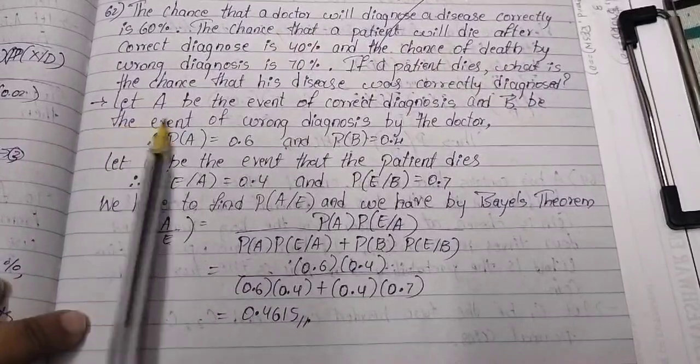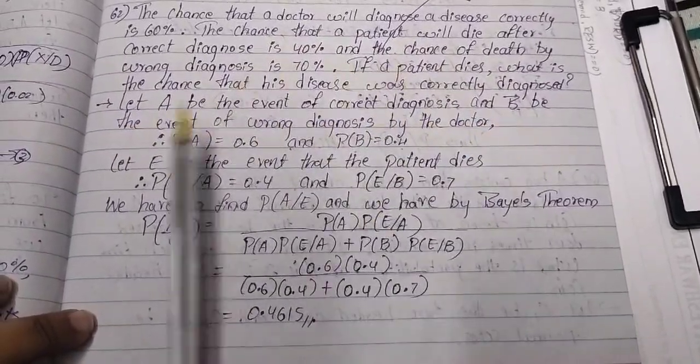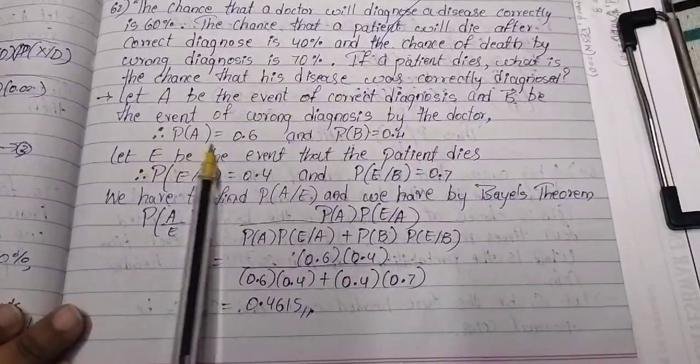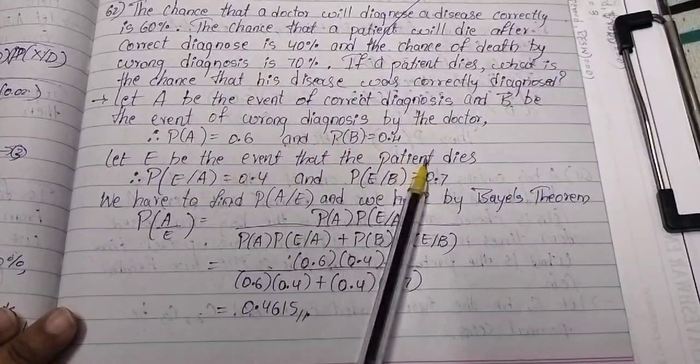what is the chance that his disease was correctly diagnosed? Solution: Let A be the event of correct diagnosis and B be the event of wrong diagnosis by the doctor. So P(A) = 0.6 and P(B) = 0.4.